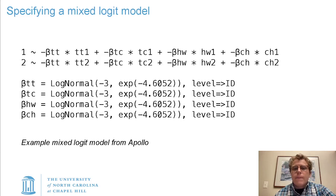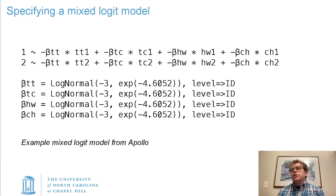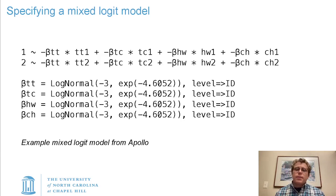The way you would specify that is your utility functions would still look very similar, defining things based on the coefficients and the variables from your data set. But then you're specifying a coefficient as having a distribution instead of a starting value. In this case, I've specified a log-normal distribution starting with a location parameter of negative three and a scale parameter of 0.01, defined as the exponentiation of negative 4.6. The reason for that is the scale parameter should always stay positive, so instead of modeling the scale parameter directly, I'm optimizing the logarithm of it and then exponentiating that to get a positive scale parameter.